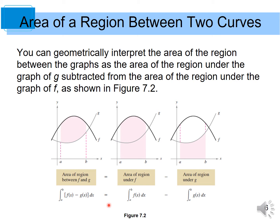In other words, we can say: if we want to get the area of the region between two functions, we take the area under the top function minus the area under the bottom function.